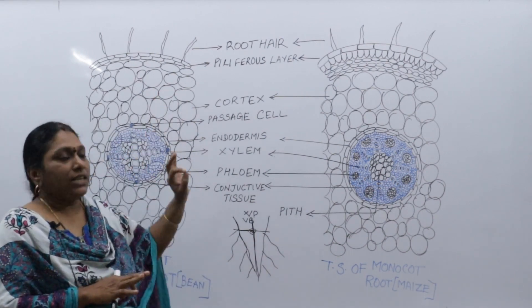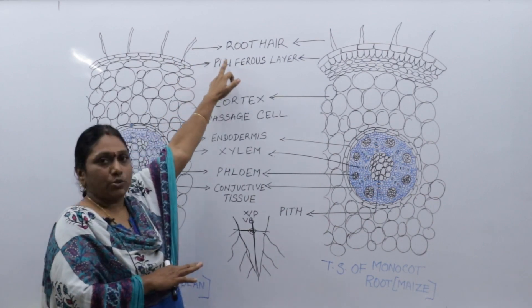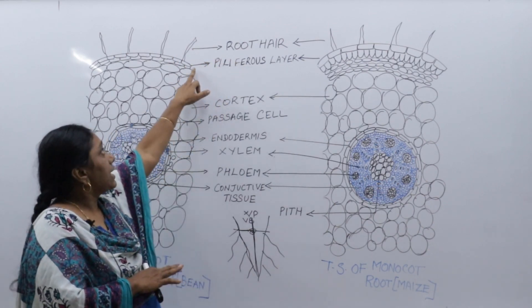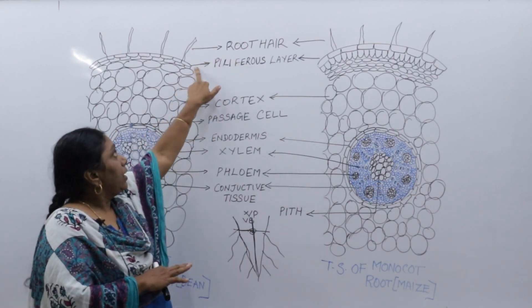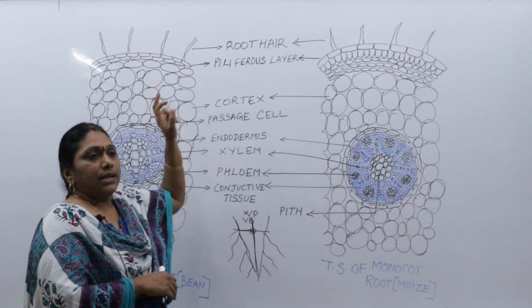So cuticle and stomata are completely absent in the root, and we will have epidermal outgrowths that is root hairs.